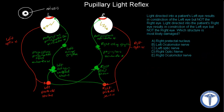Here's another question: light directed into the patient's left eye results in constriction of the left eye but not the right eye. And light directed into the patient's right eye also results in constriction of the left eye but not the right eye. This tells you there's a problem with the right eye. Now let's see which answer fits best. Answer A: right pre-tectal nucleus. If we shine the light into the right eye and the damage is in the right pre-tectal nucleus, then no signals go to either side, so both eyes remain the same. But since our left eye actually constricted, this cannot be the right answer.